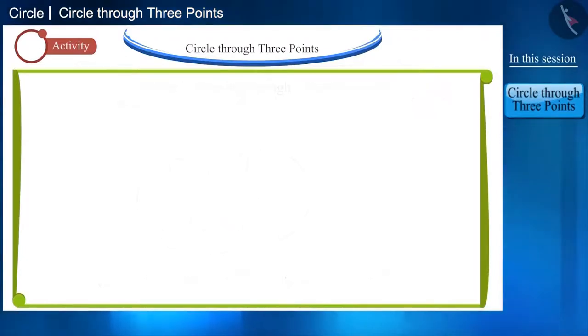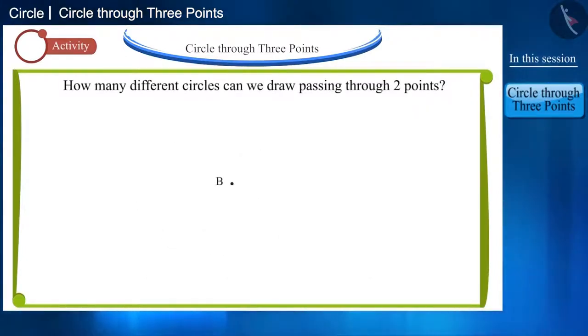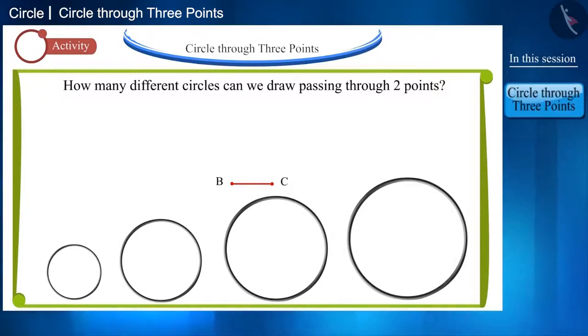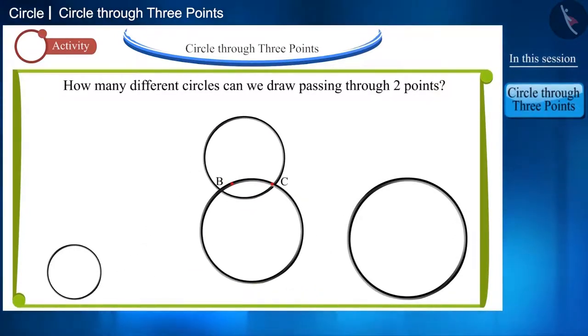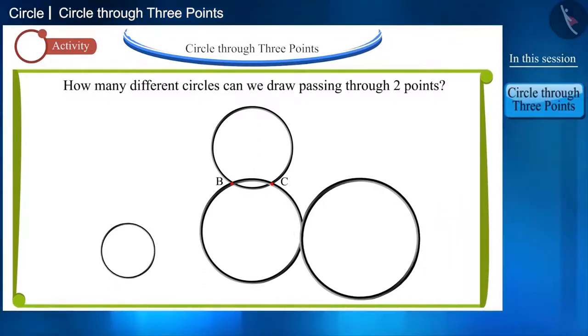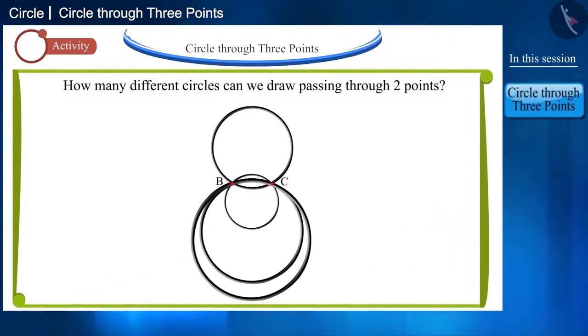Friends, instead of one point, if we take two points, point B and point C, then how many circles can you draw passing through them? You can place the rings of different sizes in this manner, keeping in mind the distance between two points. You can also place the rings in this way. Thus, you can place the rings in many ways.